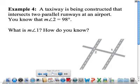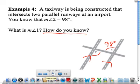And then the last example says a taxiway is being constructed that intersects two parallel runways at an airport. You know that the measure of angle 2 is 98 degrees. What is the measure of angle 1? Well, they told us that these are parallel. If this guy has a measure of 98, angle 1 is alternate interior with it. So that also has a measure of 98 degrees.